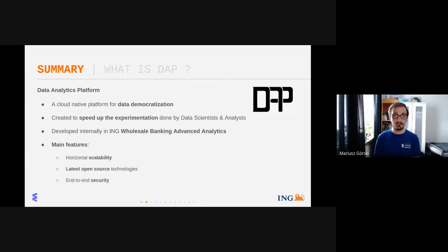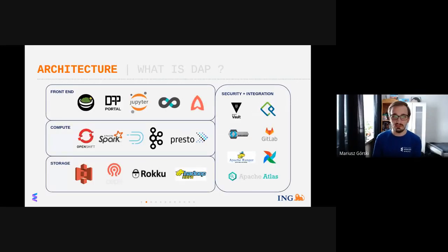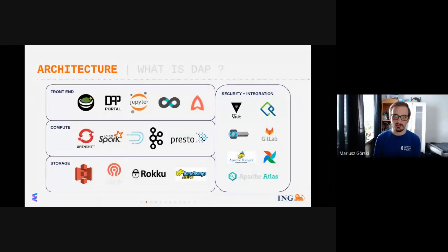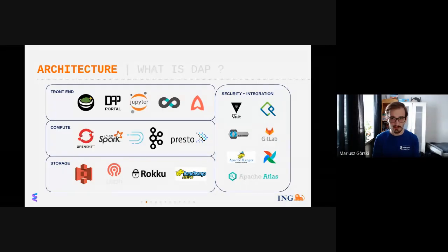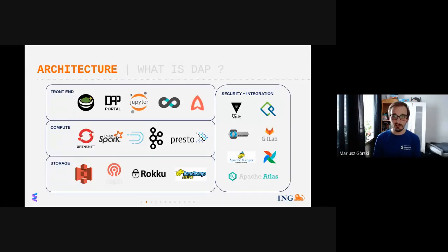Its main features are horizontal scalability, latest open source technologies, and end-to-end security. The architecture of DAP is very broad — we have a lot of front-end facing services like Guacamole, an internally developed portal, a JupyterLab environment for data scientists, Apache Superset for data analysis, and a collection of security and integration components. We use big data technologies like Apache Spark and Presto clusters, and we use Kafka.